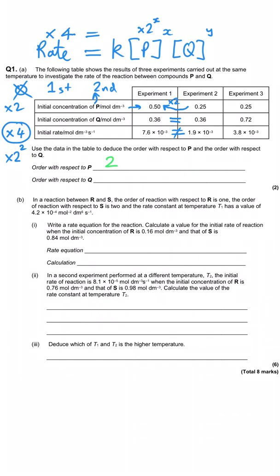Now we look for the order with respect to Q using experiments two and three. P is unchanged between those two experiments, but we've doubled the concentration of Q. Q is definitely not zero order because the two rates aren't equal. As we've doubled Q, the rate has gone from 1.9 to 3.8×10⁻³, which is also doubled — so Q is first order.